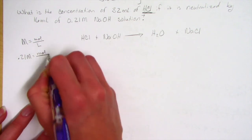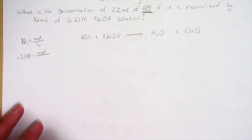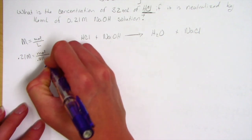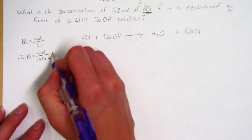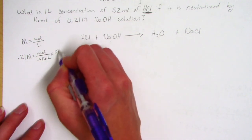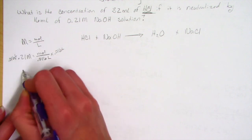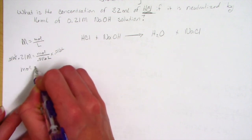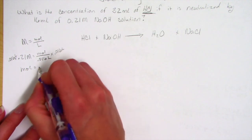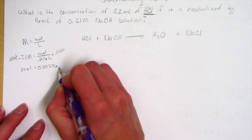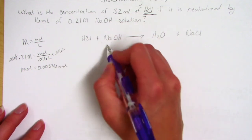So we have 0.21 molar equals moles over 16 milliliters. We're going to convert to liters, so we divide by 1000 and use 0.016 liters. We multiply both sides by 0.016 liters and end up with moles equals 0.00336 moles.